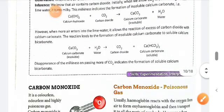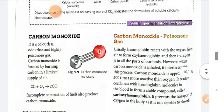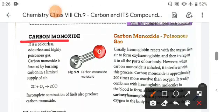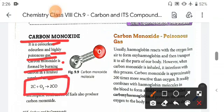Next thing is carbon monoxide. This is also a carbon compound and it is a colorless, odorless, and highly poisonous gas. Carbon monoxide is formed by burning carbon in a limited supply of air. The reaction is carbon plus oxygen.